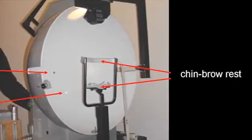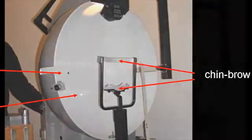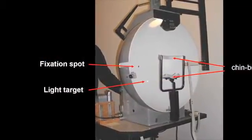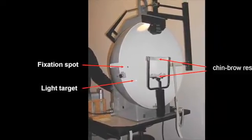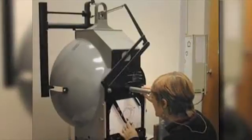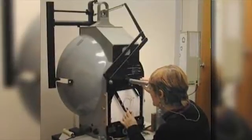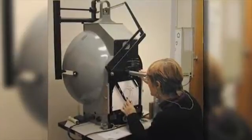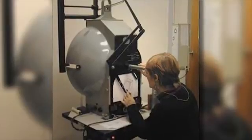In a photograph, we see a hemispheric perimeter. Red arrows point to a chin and brow rest, which allow the head to remain in a steady position during testing, aiding focus on a fixation point at the center of the hemisphere. A bright point in the hemisphere is the light target. We also see the device from the back, with an examiner peering through a scope. Using a Goldman perimeter chart, the examiner picks a point at which the light target will be presented, and the results are then plotted by the examiner.